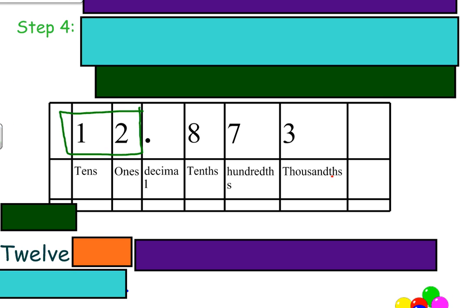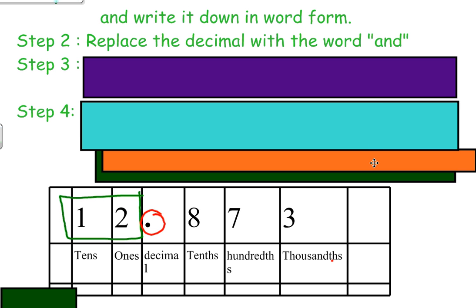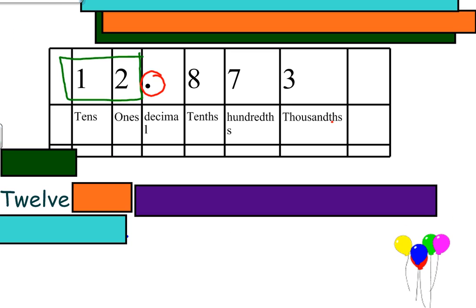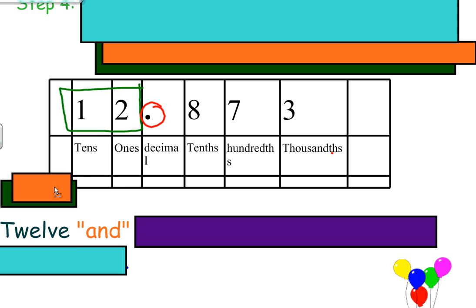The second step, this is probably the most difficult, I'm just kidding, it's not difficult at all. We simply replace the decimal with the word 'and'. You can see right up here we're replacing the decimal with the word 'and'.